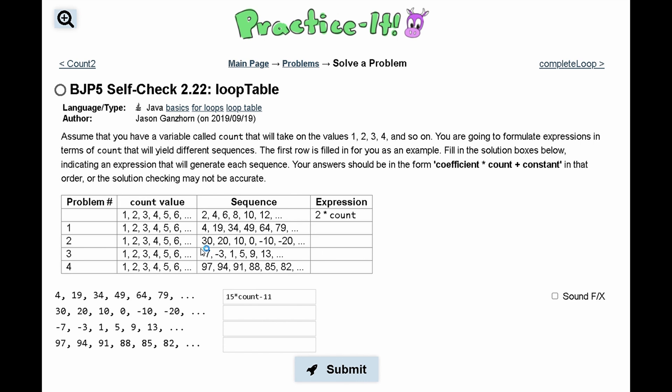For this next part, we can do the same thing, where we take 30 minus 20, 20 minus 10, and we are going to see that we have a negative 10 times count. But, just like the last one, it is not going to be the same sequence. So what we have here is negative 10 times count plus 40, and that will give us the correct sequence.